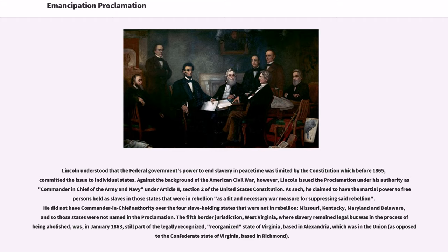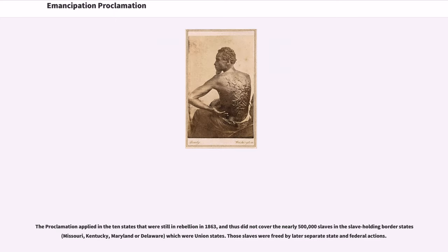The fifth border jurisdiction, West Virginia, where slavery remained legal but was in the process of being abolished, was in January 1863 still part of the legally recognized reorganized state of Virginia, based in Alexandria, which was in the Union, as opposed to the Confederate state of Virginia based in Richmond. The proclamation applied in the ten states still in rebellion in 1863, and thus did not cover the nearly 500,000 slaves in the slave-holding border states Missouri, Kentucky, Maryland, or Delaware, which were Union states. Those slaves were freed by later separate state and federal actions.